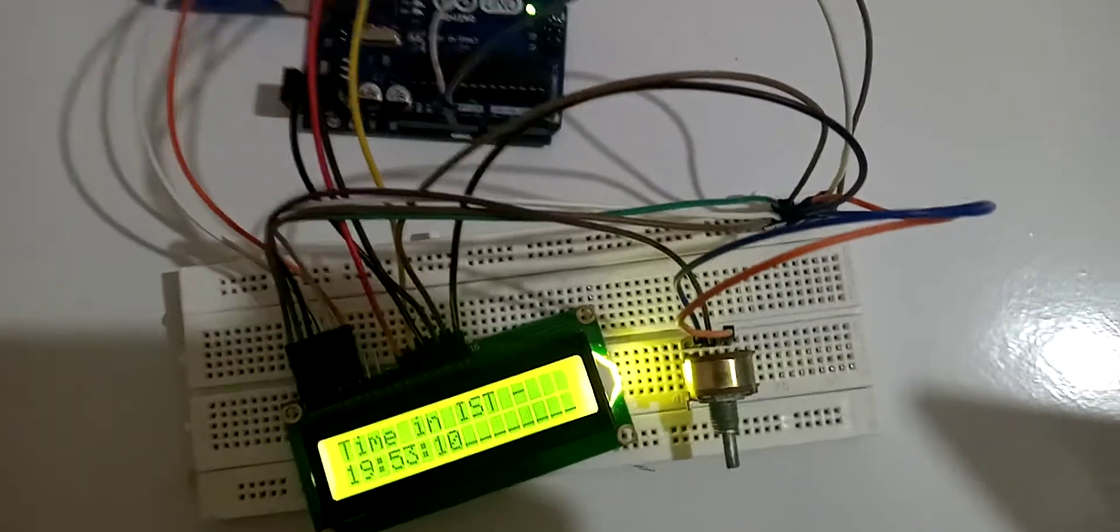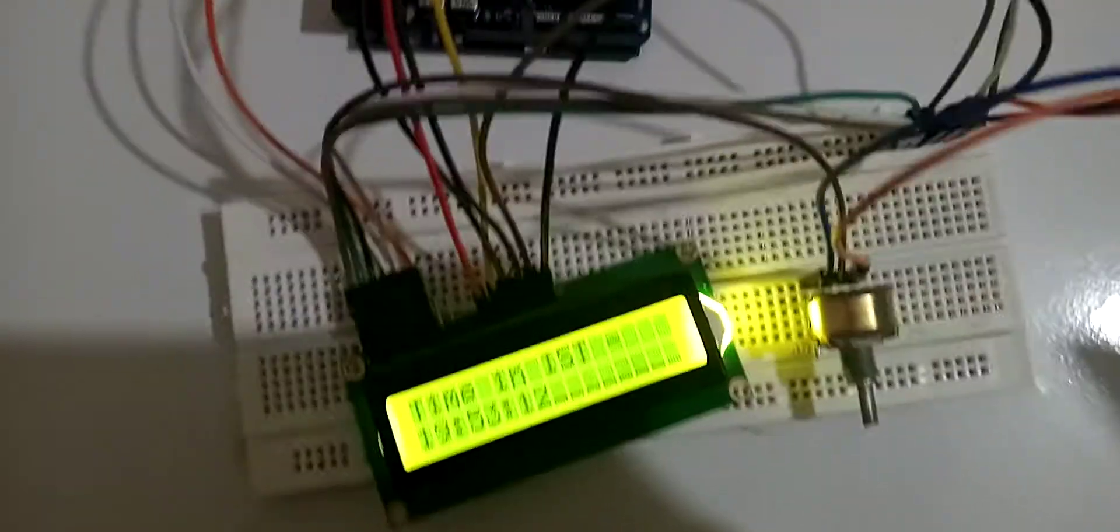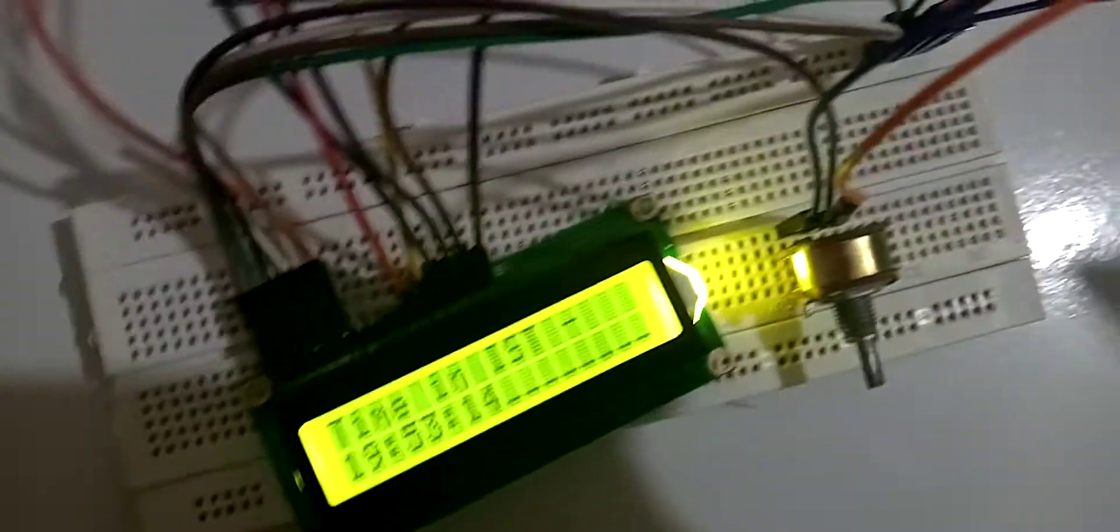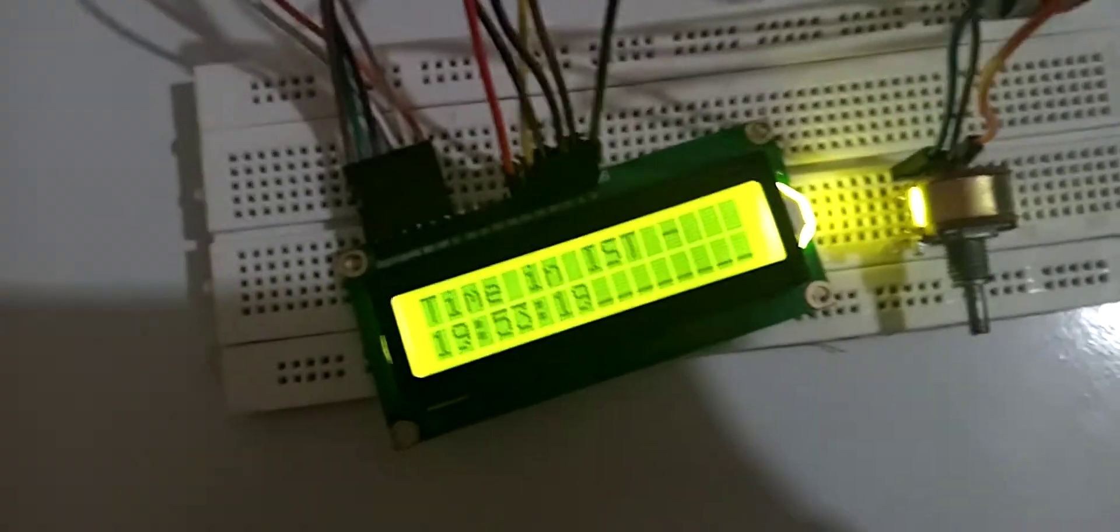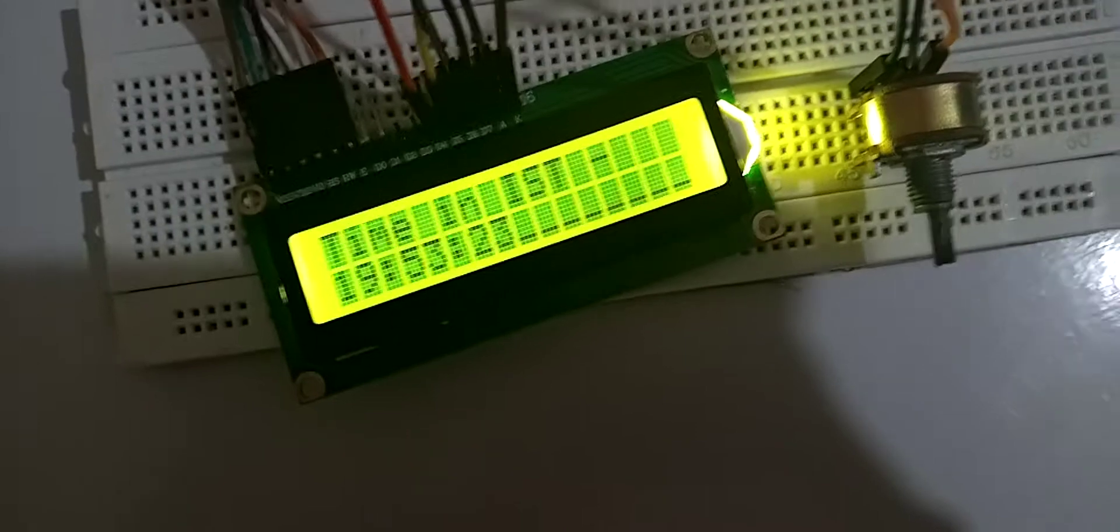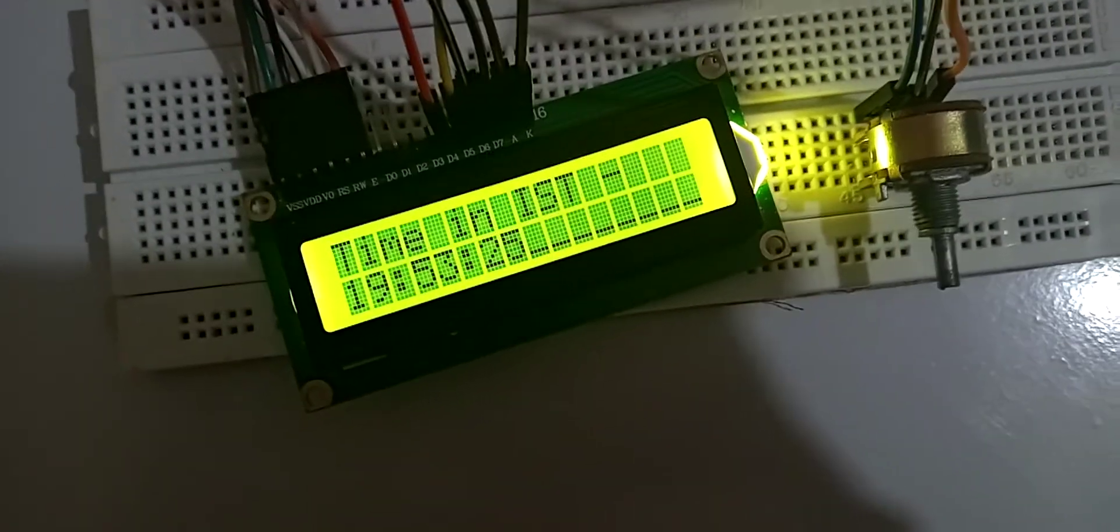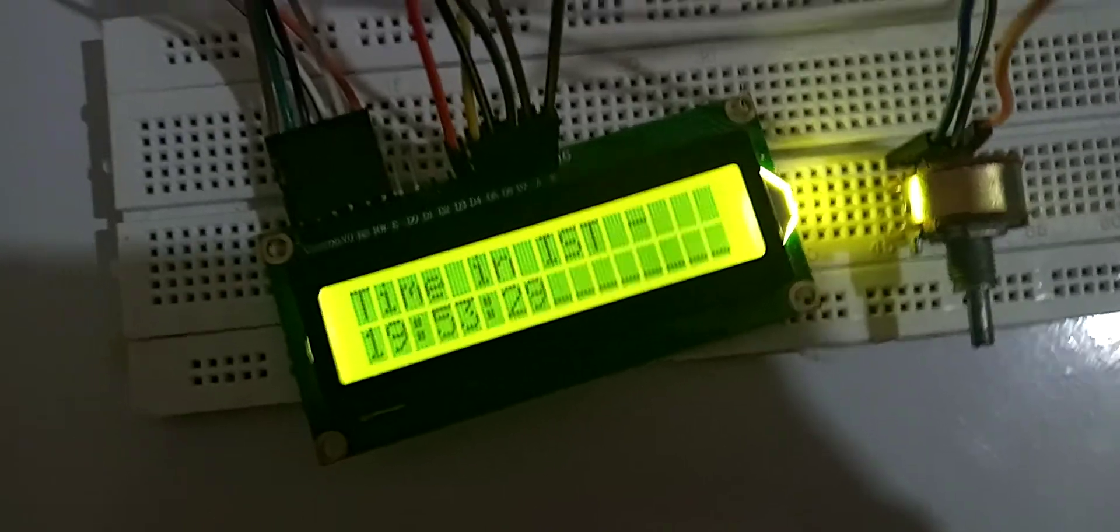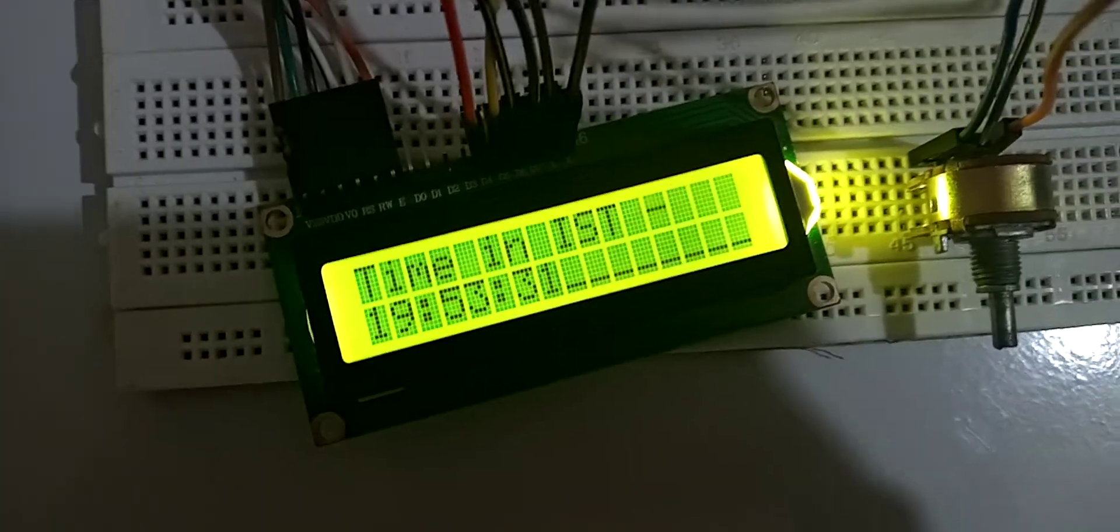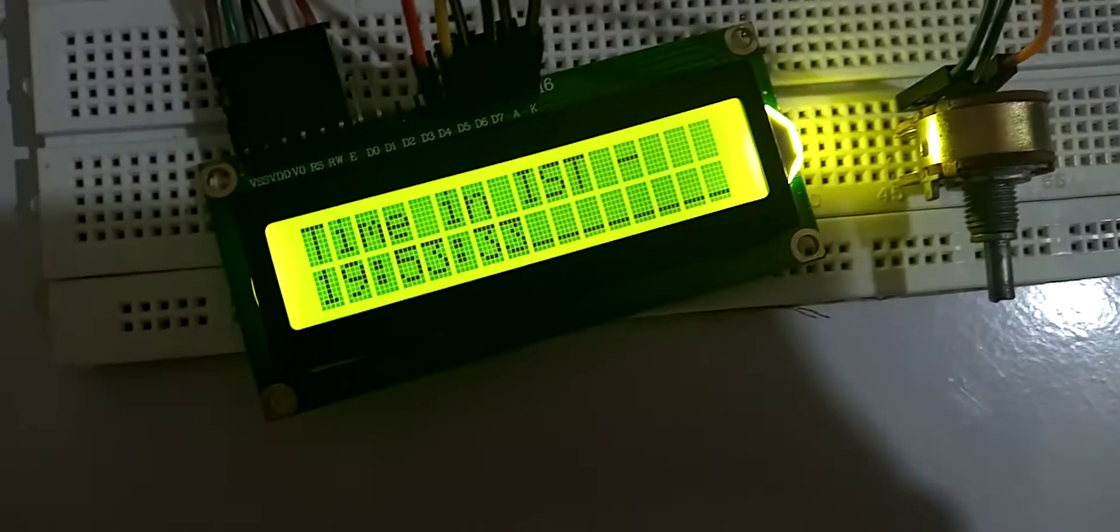If you can see the output, this is the time in Indian Standard Time. The time right now is in 24-hour format, and it is mandatory that the time will be in 24-hour format. It is now 7:53. Is this time right? Let's check it with my laptop to see whether the time is correct or not.